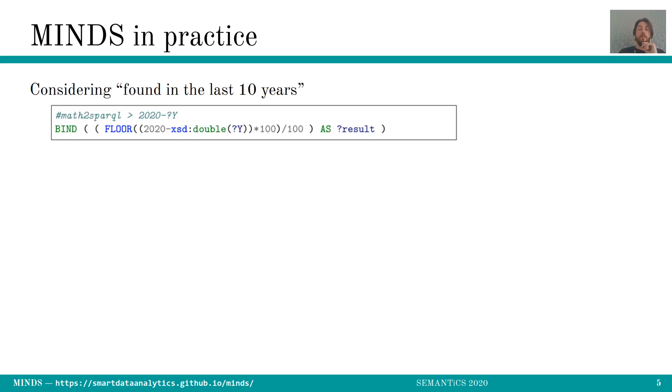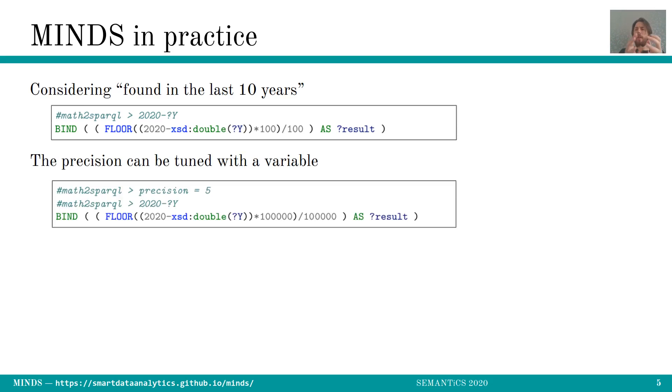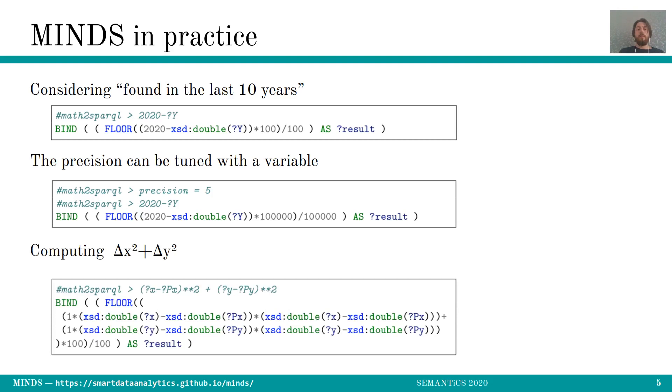So in practice, if we just reconsider the found in the last 10 years, you just type 2020 minus variable Y, and then you obtain the binding. So the binding is actually pretty simple here. But you can see that there are some divided by 100 and so on and so forth. And the idea here is that you can also tune the precision through the precision variable and decide how precise your results should be. It's not really useful here on that example, but it's really useful when you are computing complex approximations. You might want to have a certain degree of precision.